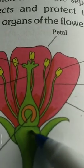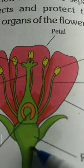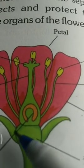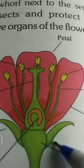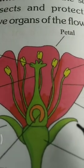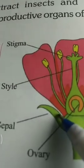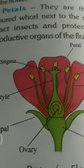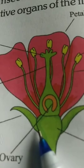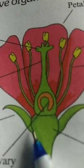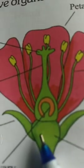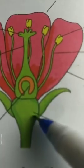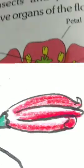Then thalamus — it is the uppermost end of the pedicel that is swollen and holds the floral wall of the flower. The floral walls are sepals. Sepals are green leaf-like structures that protect the flower during the bud stage. They form the outer wall of the flower.